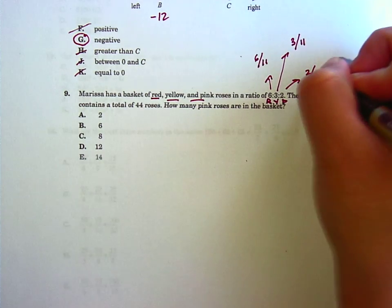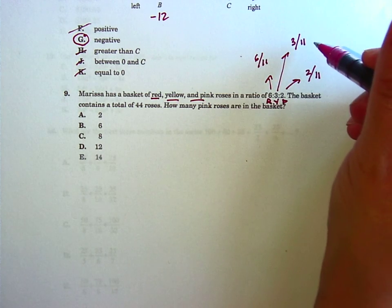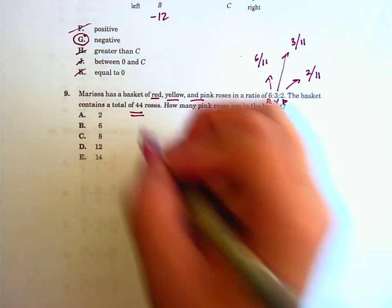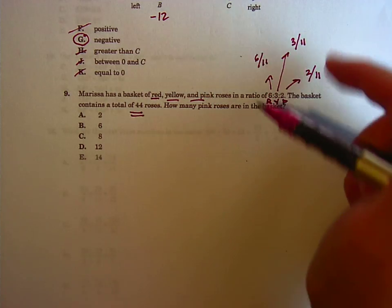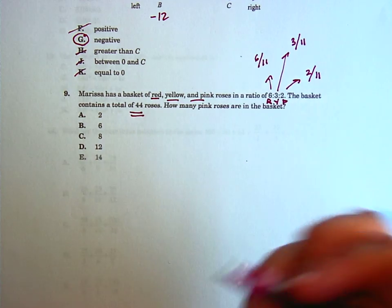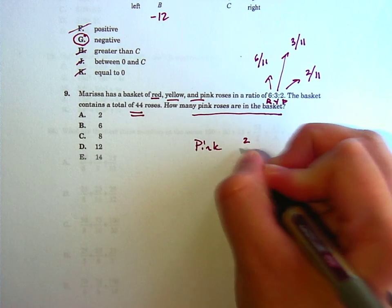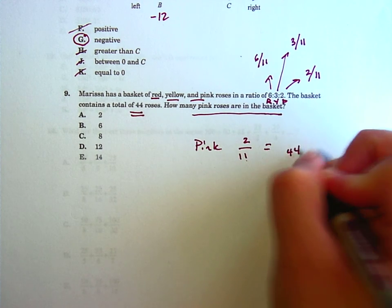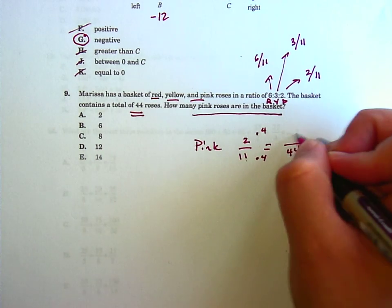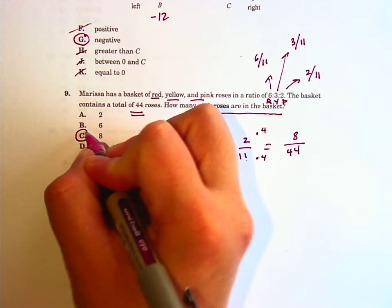Basically, if you had 11 roses in this ratio, 2 out of 11 of them would be pink, and 3 out of 11 of them would be yellow, and 6 out of 11 of them would be red. So, now it's saying that we have a total of 44 roses, which I'm taking as good news, because I know that the ratio here is 11, and we're going to 44. Pink is 2 out of 11, and we're trying to get to 44. So, to go from 11 to 44, you've got to multiply by 4, so we're going to multiply by 4 on the top 2. That's 8 out of 44 right there. So, how many pink roses are in the basket? 8.